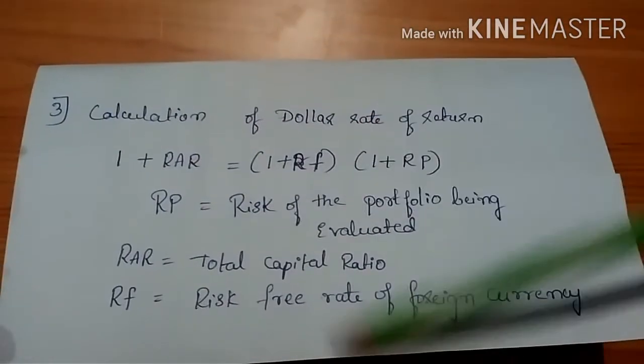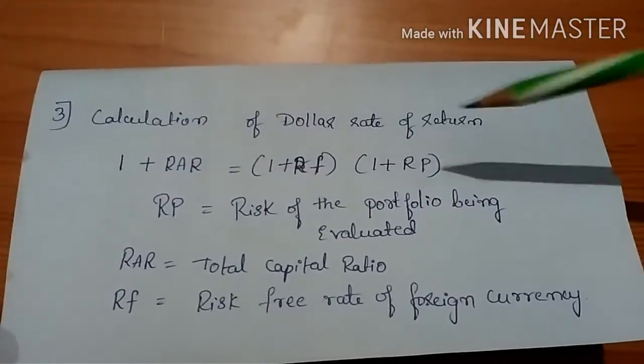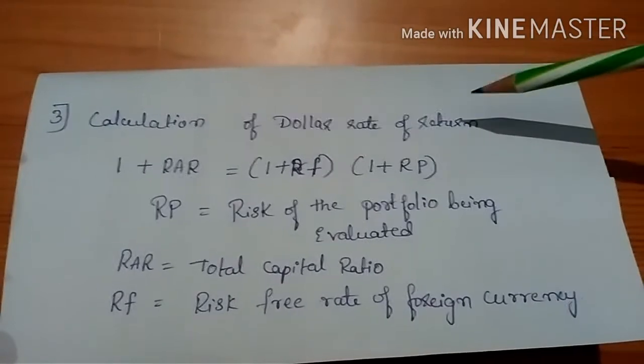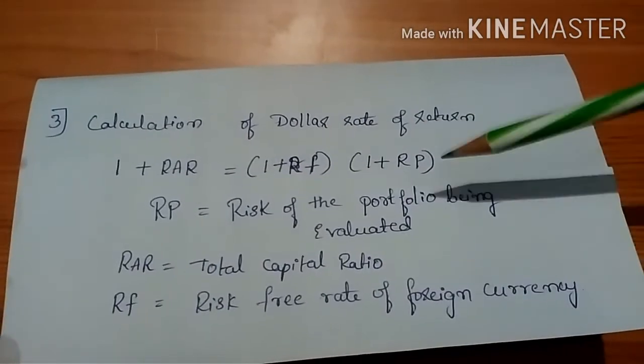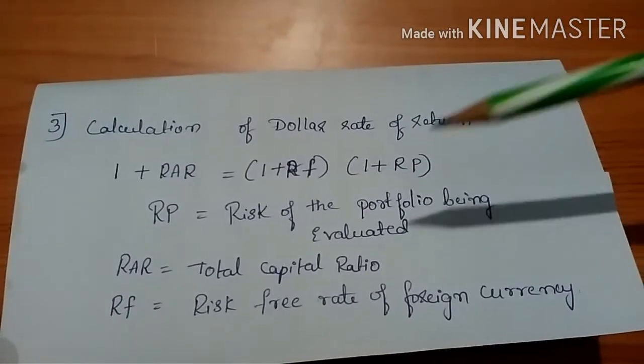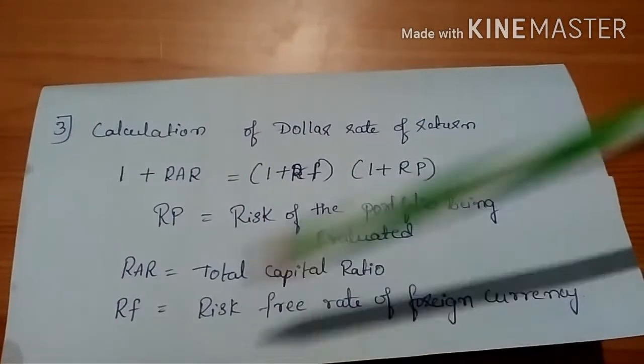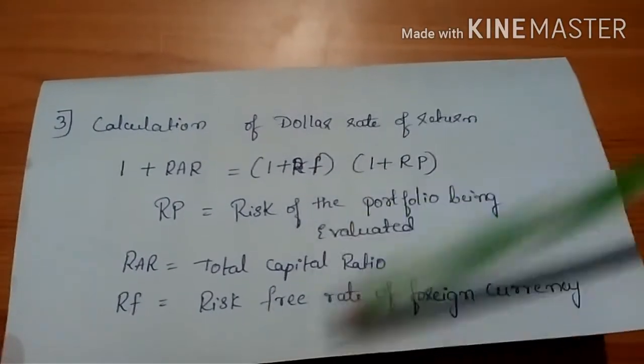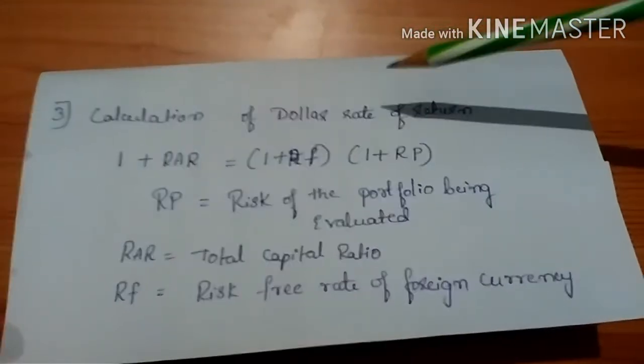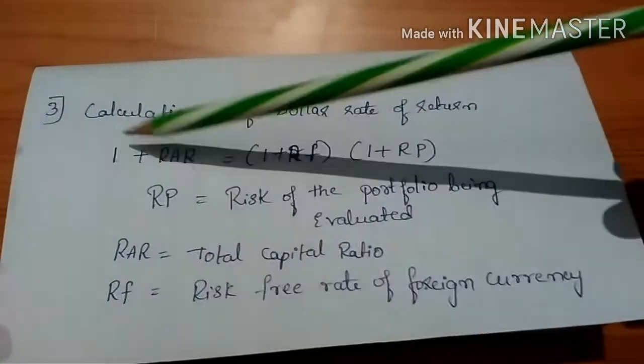Coming to the third step, calculation of dollar rate of return. We are going to calculate the risk of Indian currency as well as foreign currency risk. Both the NPVs, from the Indian side and from the foreign side, should be profitable so that it helps us. This calculation of dollar rate of return will be the last step.